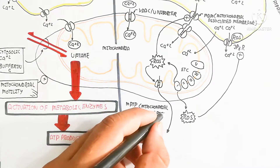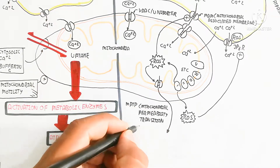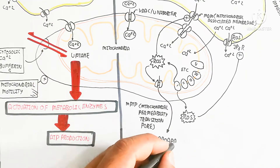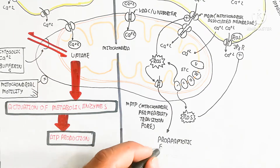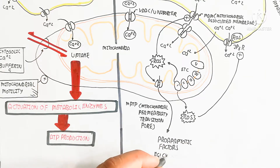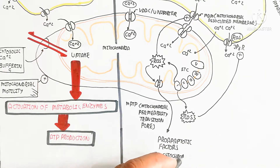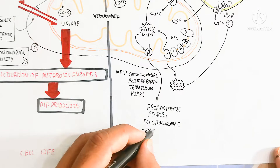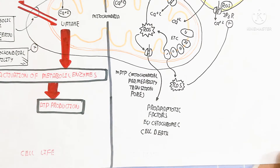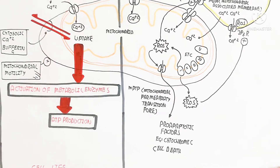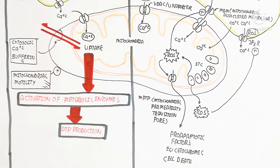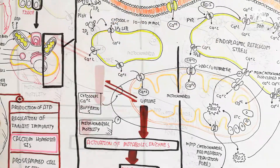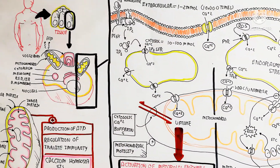In this case, the mitochondrial permeability transition pore opens, leading to influx of apoptotic factors such as cytochrome c. Cytochrome c then initiates a phosphorylation cascade leading to cell death. In this manner, the cell will die — otherwise, if calcium homeostasis is maintained normally, the cell can survive.